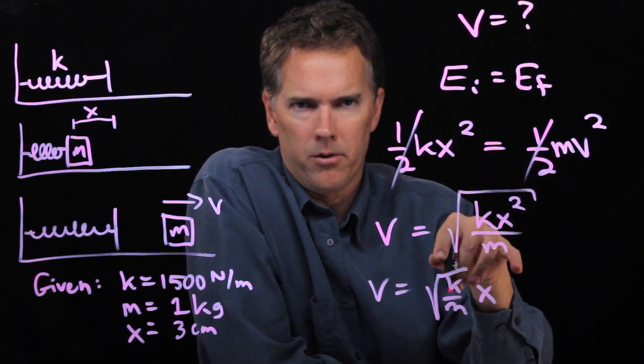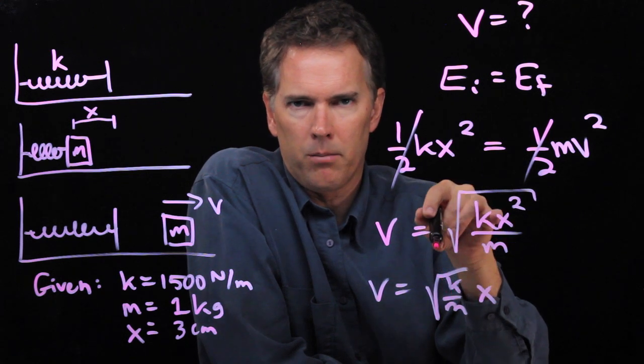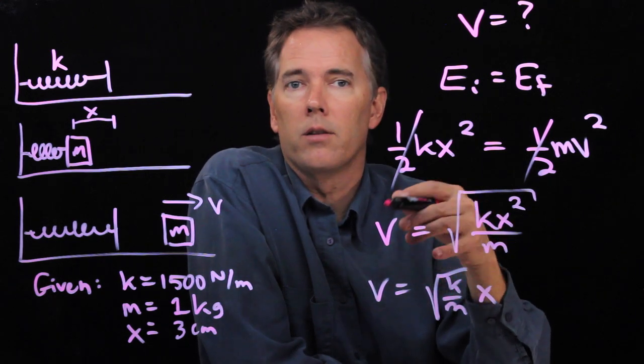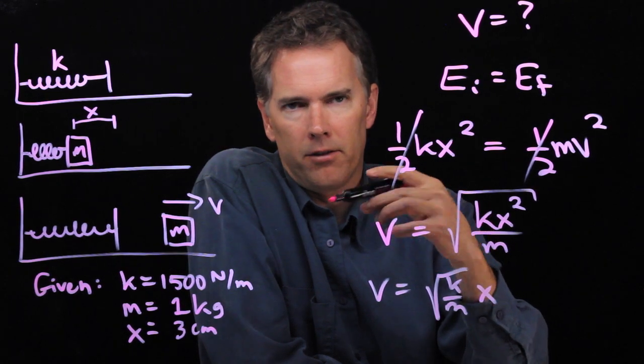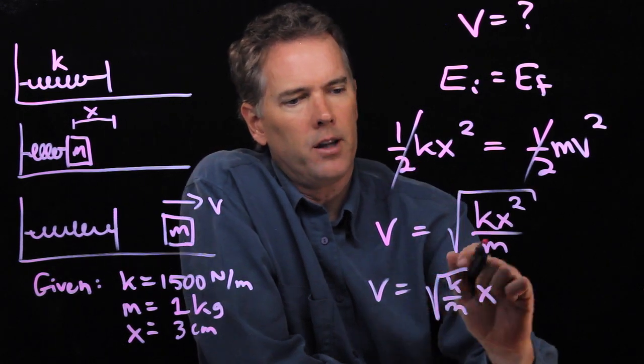Now later on, you're going to learn that square root of k over m is something very important in harmonic oscillation. It's something called omega, the angular frequency of that system. But for right now, we'll just leave it as this.